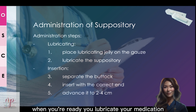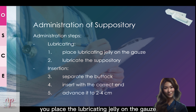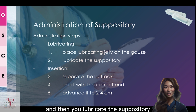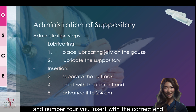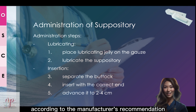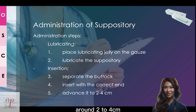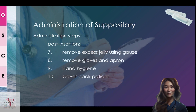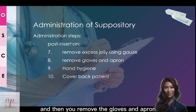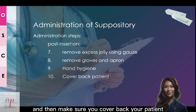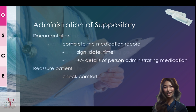When ready, lubricate the medication by placing lubricating jelly on the gauze and lubricating the suppository. For insertion: separate the buttock with your non-dominant hand, then insert with the correct end according to the manufacturer's recommendation, and advance it around 2 to 4 cm. After insertion, remove the excess jelly using gauze, then remove the gloves and apron. Perform hand hygiene and cover the patient to maintain privacy and dignity.